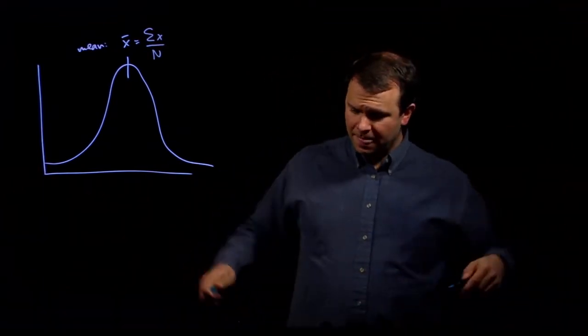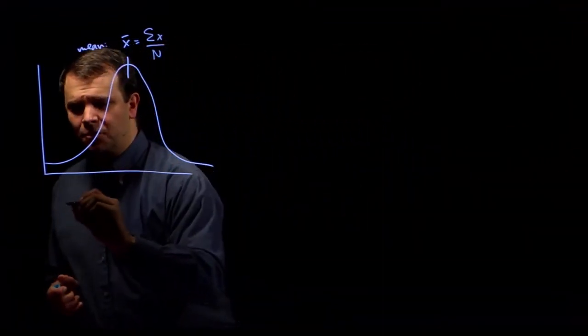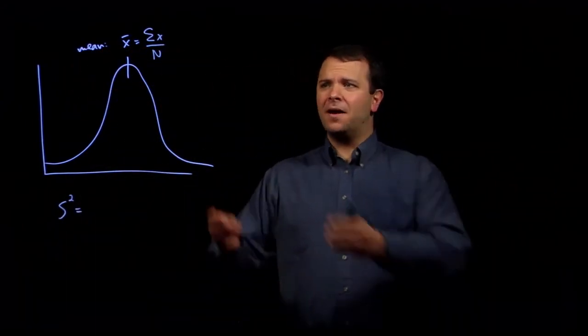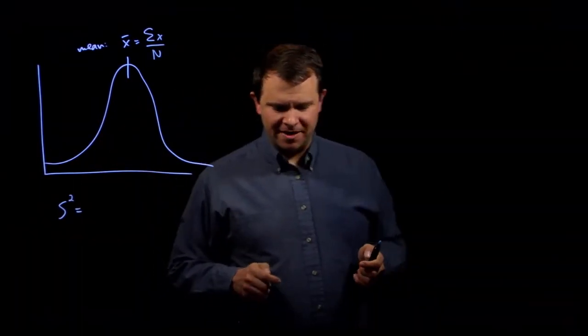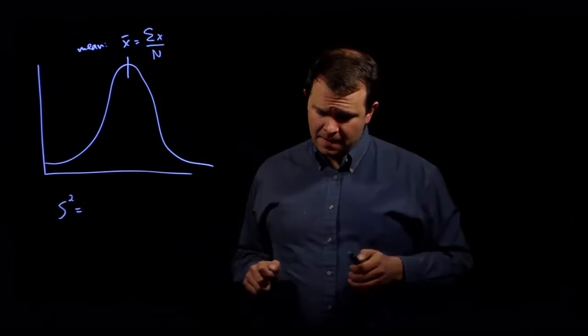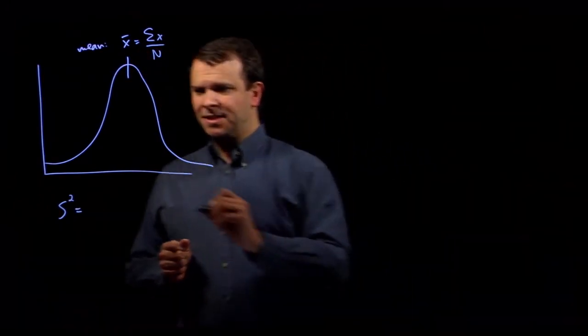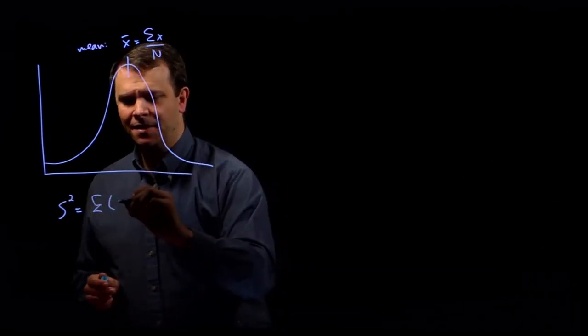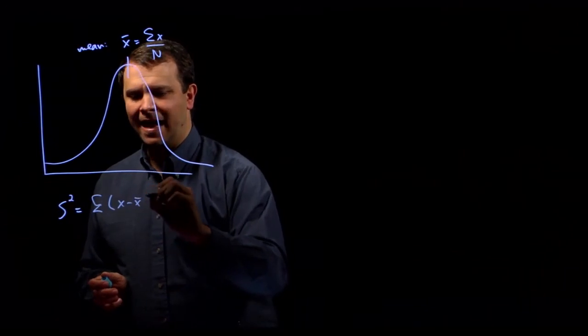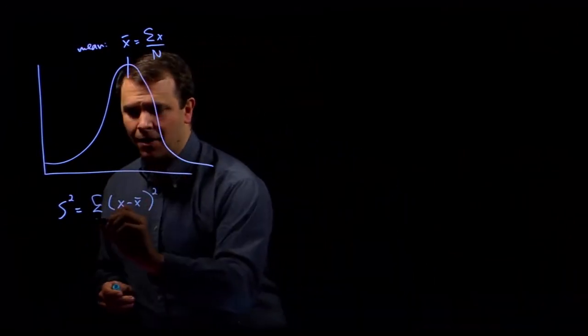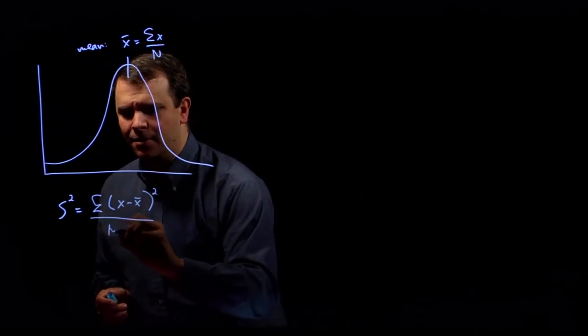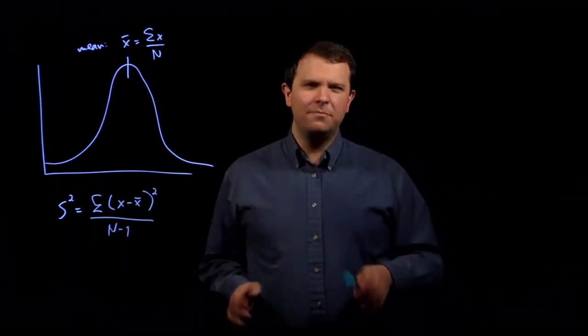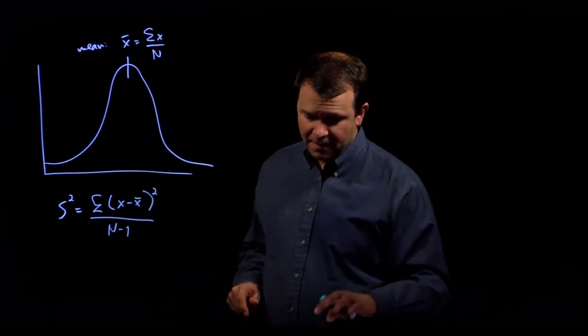The second number is variance, which we'll call s squared. And s squared is a measure of how spread out this distribution is. Once you've computed the mean, you can compute the variance by just taking the sum of the difference of each measurement and the mean, taking the square of that and dividing the whole thing over n minus 1. And why n minus 1 instead of n? Don't ask. It's complicated.